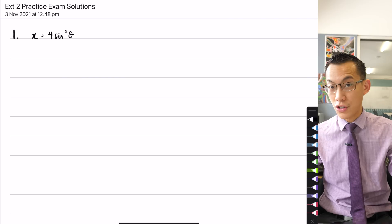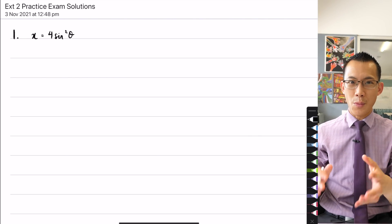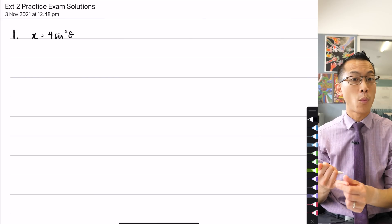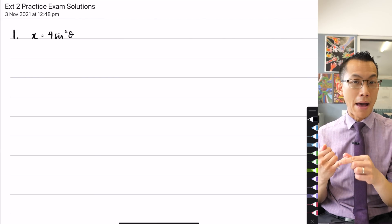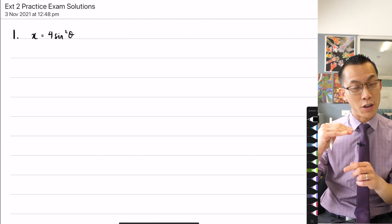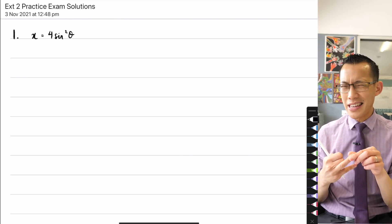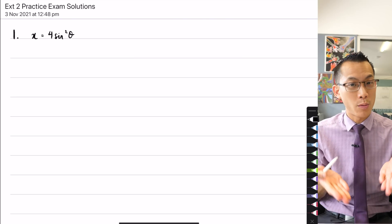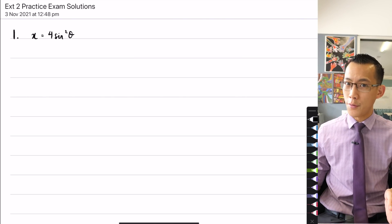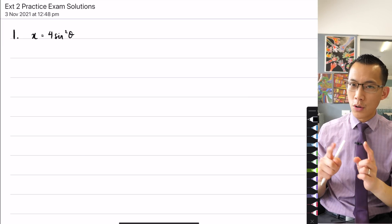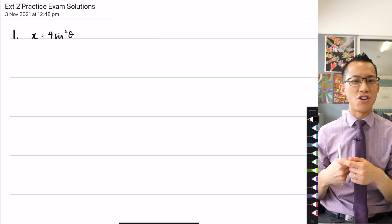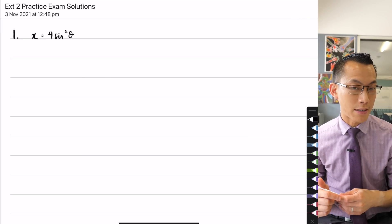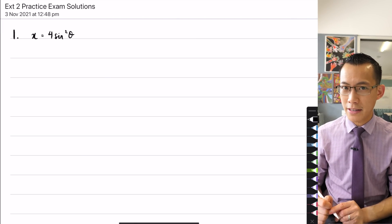We see these trigonometric substitutions all the time. When we think about a definite integral, there are really three things that need to be changed. Number one, we have to change the boundaries. Number two, we've got to work on the integrand — we'll substitute wherever we see x with 4 sine squared theta. And number three, we need to change the variable of integration, so we'll need to know what dx on d theta is, then integrate with respect to theta.